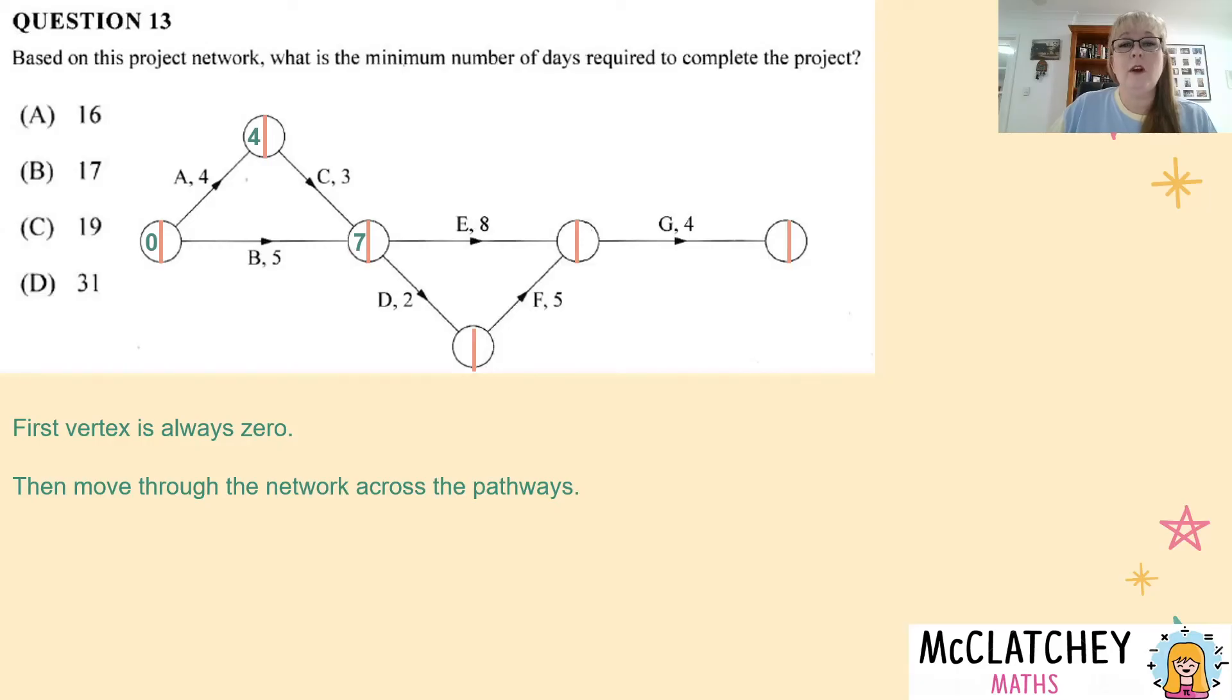Now we've got from seven we've got D and E coming out. I'm going to move to D first because it's only got one pathway into that. So seven plus two gives me nine and now I've got a choice again. Do I choose E's pathway or F's pathway? So E will be eight plus seven gives me 15. F gives me nine plus five which is 14. I'm going to choose the higher of the two and then following through through G, 15 plus four gives me 19 days to complete the project which means I can choose option C.